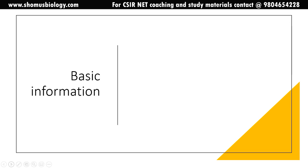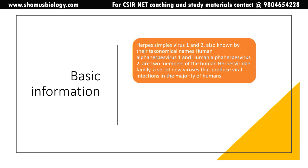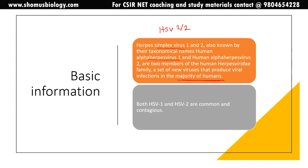The basic information: we call it herpes simplex virus or HSV. There are two types — HSV type 1 and HSV type 2 — also known by their taxonomical names, human alpha herpesvirus 1 and human alpha herpesvirus 2. They are two members of the human Herpesviridae family, a set of viruses that produce viral infection in the majority of humans. Both HSV-1 and HSV-2 are common and contagious.